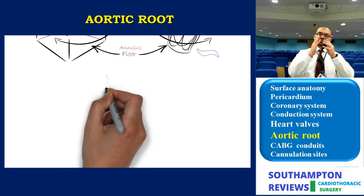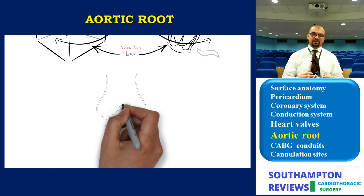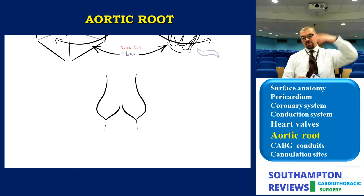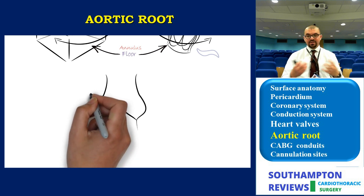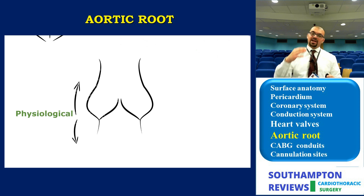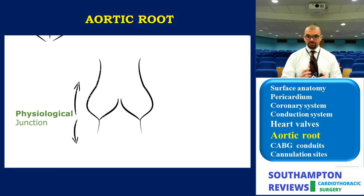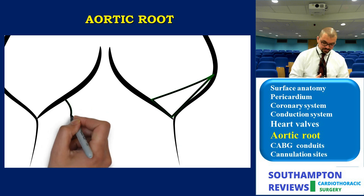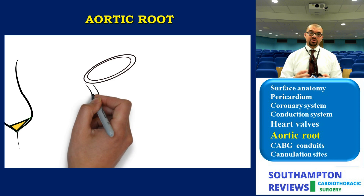Before we proceed, we need to understand how the valve leaflet divides the aorta and the LVOT into two functional physiological sections. One above the leaflet is the elastic recoil section, which receives blood and allows elastic recoil back to normal diameter. Below the cusps is the left ventricular part, which functions in systole and diastole - contracting and relaxing.